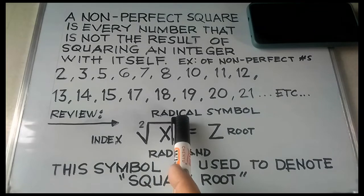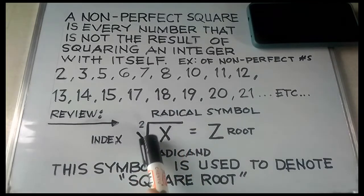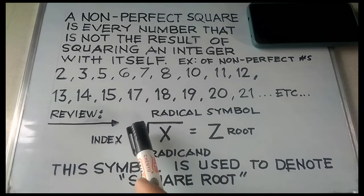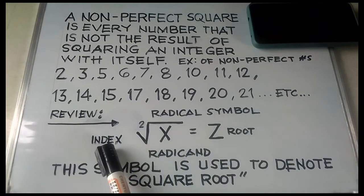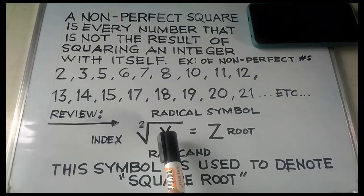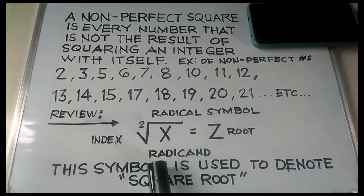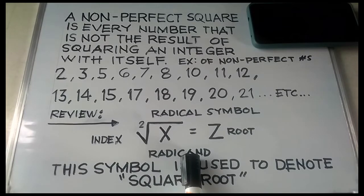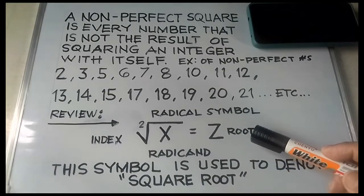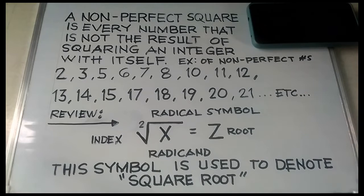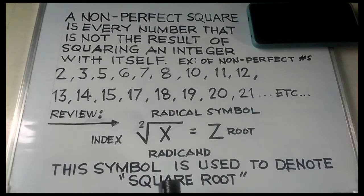This symbol is called the radical symbol, and the exponent on the left is called the index. The x inside the radical symbol is called the radicand, where x is equal to c, and c is called the root. This symbol is used to denote square root. Now let's simplify non-perfect square roots.